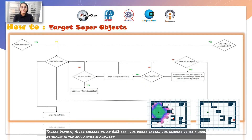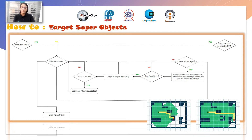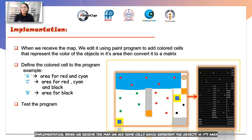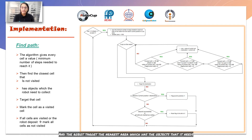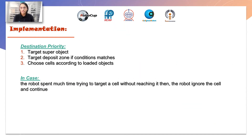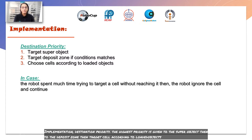Target deposit: after collecting an RGB set, the robot targets the nearest deposit zone, as shown in the following flowchart. The robot targets the nearest area which has the objects it needs. The highest priority is given to the super-object, then to the deposit zone, and then to a cell according to its collected objects. In case the robot spends too much time trying to target a cell without reaching it, it ignores the cell and continues.